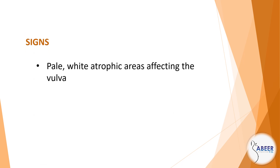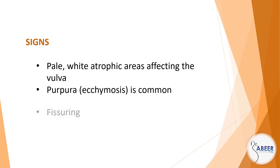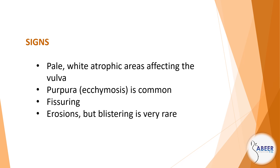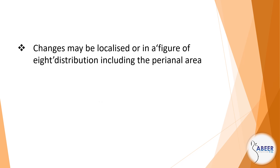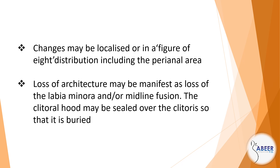Signs include pale white atrophic areas affecting the vulva. Purpura or ecchymosis is common. Fissuring and erosions may be present, but blistering is very rare. Hyperkeratosis can occur. Changes may be localized, or in a figure-of-8 distribution including the perianal area. Loss of architecture may be manifest as loss of the labia minora and/or midline fusion. The clitoral hood may be sealed over the clitoris so that it is buried.